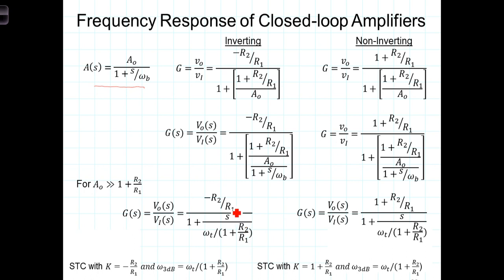And the DC gain, instead of it being A0, like 100 dB or 100,000, the DC gain is going to be the closed-loop gain that we've calculated for either the inverting or the non-inverting amplifier configurations. Thank you.